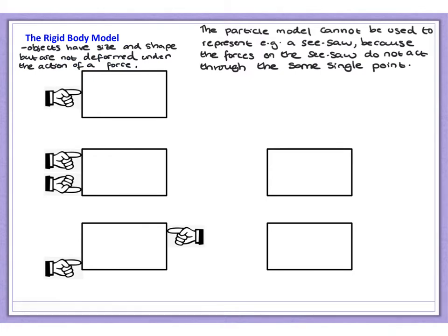Let's visualise an example. Look at the first diagram - imagine that's a book on top of a table and somebody is pushing on that book from one side. The force applied by the person pushing acts parallel to one side of the book and acts through the centre of mass of the book. In this example, it's perfectly fine to use the particle model. We could model this book as a particle, with a pushing force F acting in this direction, which causes the book to move forward along the table.